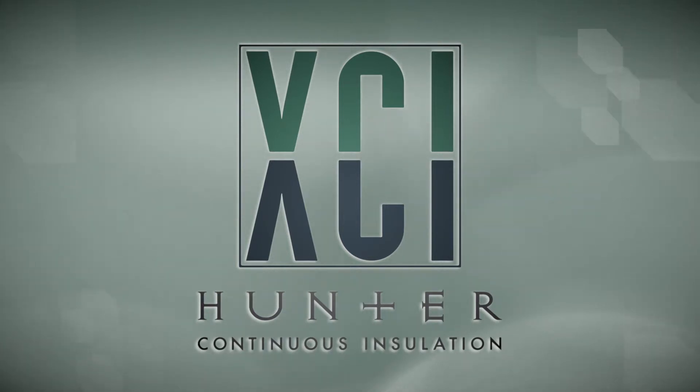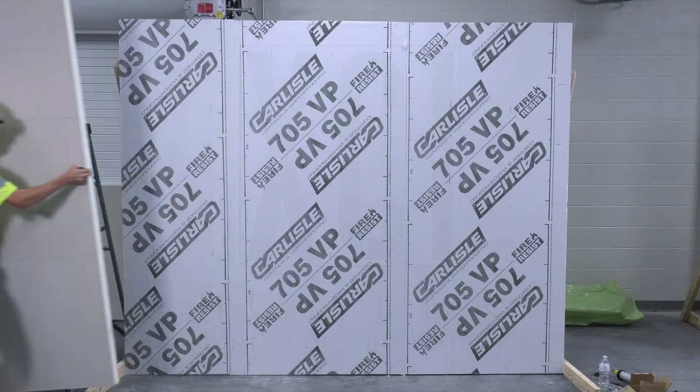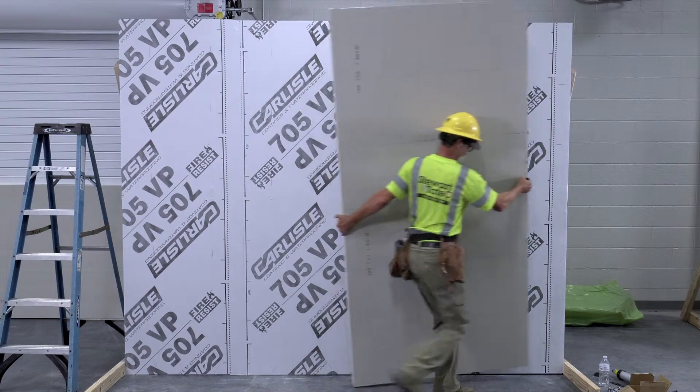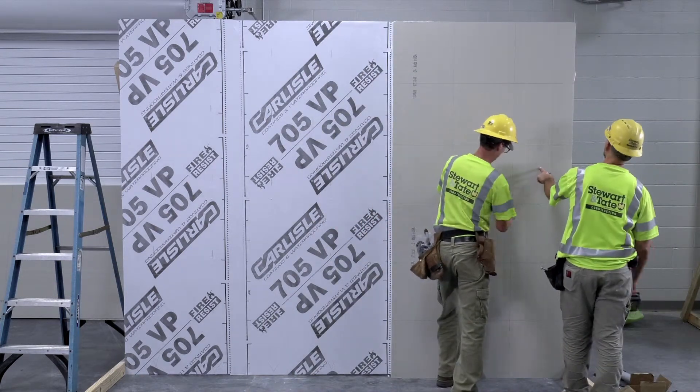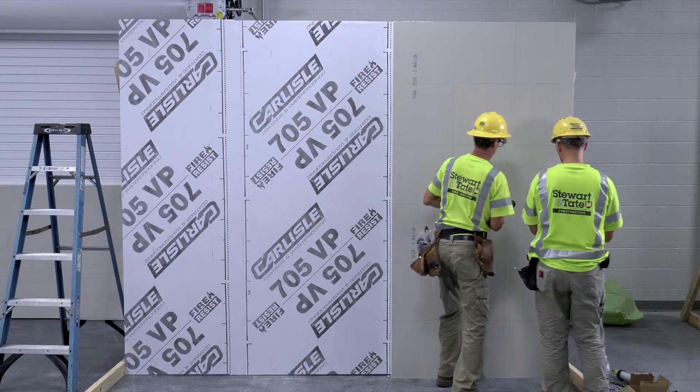To install the first full panel of XCI-CG, press it firmly against the gypsum and WRB, aligning with the framing members for proper securement.